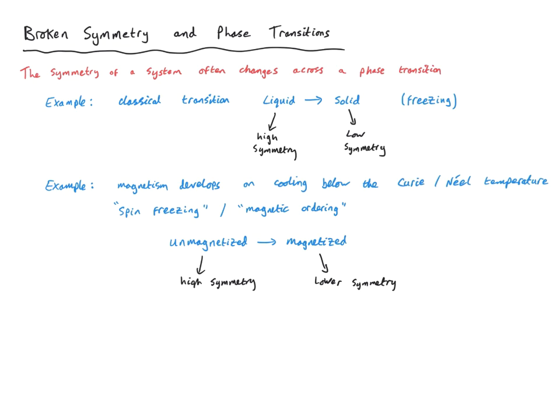We also have more subtle examples — what about when we cool a material through the superconducting transition? In what sense is a superconductor a more ordered state than a regular metal? So we seem to have this phenomenology that there is symmetry breaking at a phase transition. But how and why? Before discussing the mechanism for spontaneous symmetry breaking in real systems, I want to play devil's advocate and convince you that actually this should never happen — I want to convince you that there really is a puzzle before resolving it.